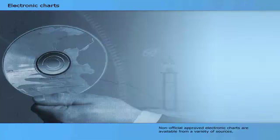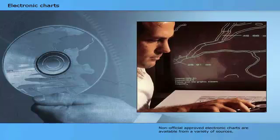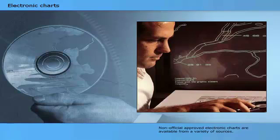Non-officially approved electronic charts are available from a variety of sources. For example, the UK Hydrographic Office's Admiralty Raster Chart Service, ARCS, provides worldwide coverage with a series of about 2,500 raster charts. Commercial chart providers such as Transas Marine and CMAP claim to provide near worldwide coverage with a series of vector charts.